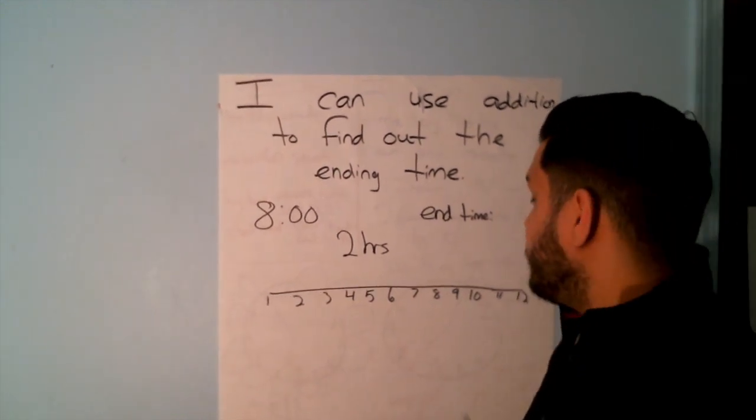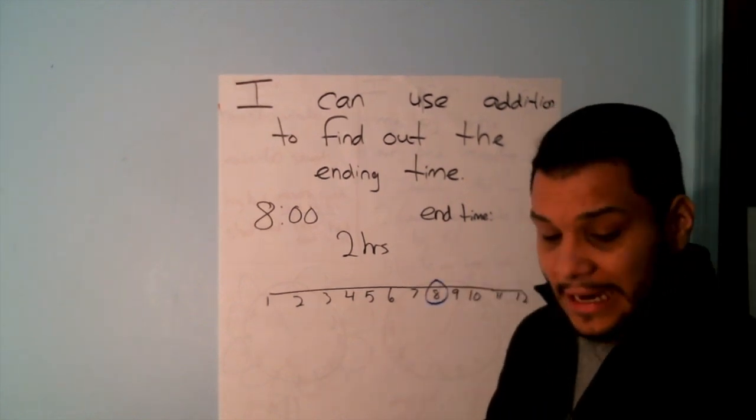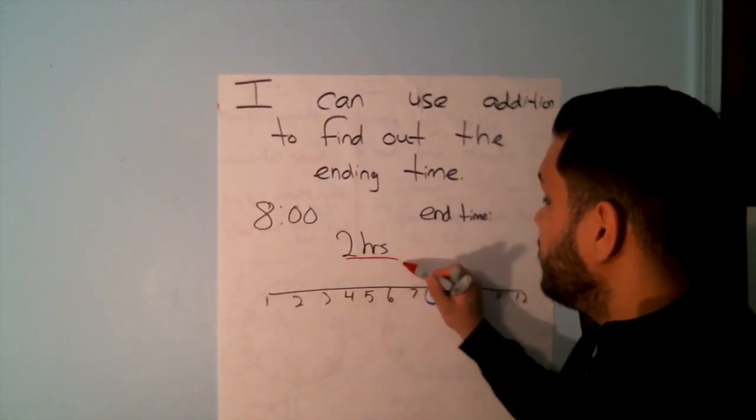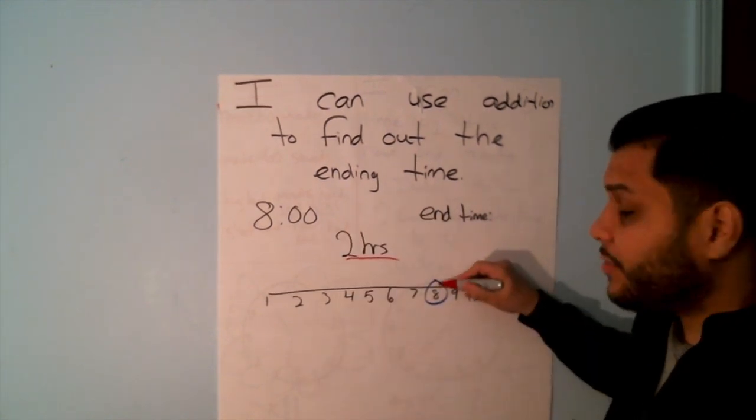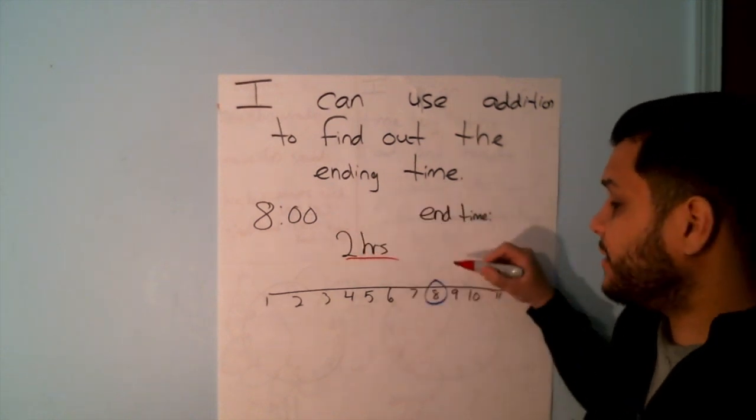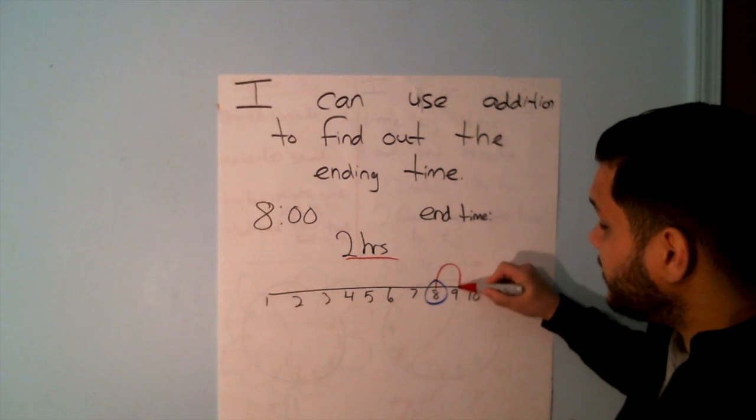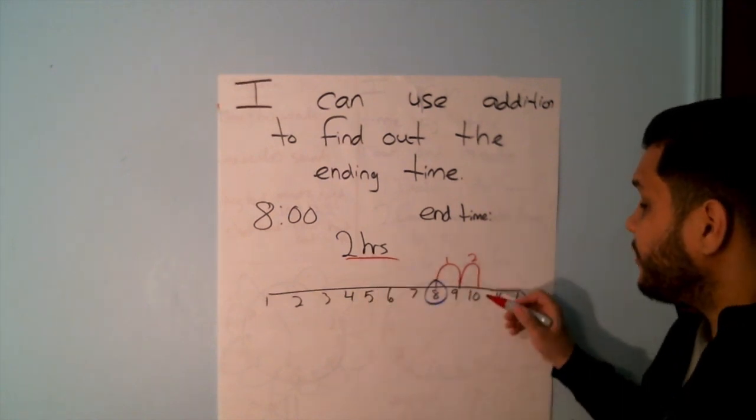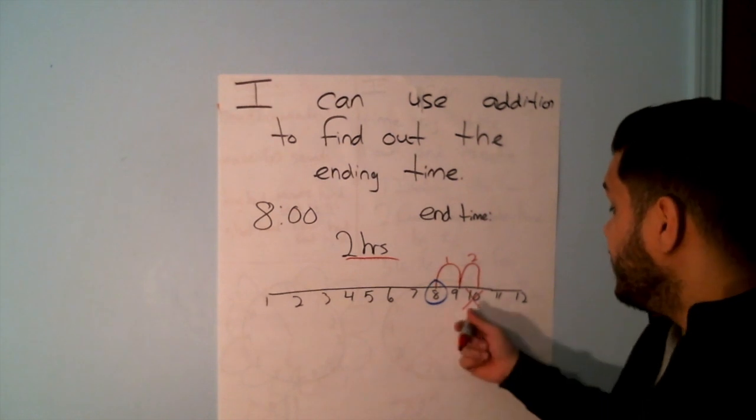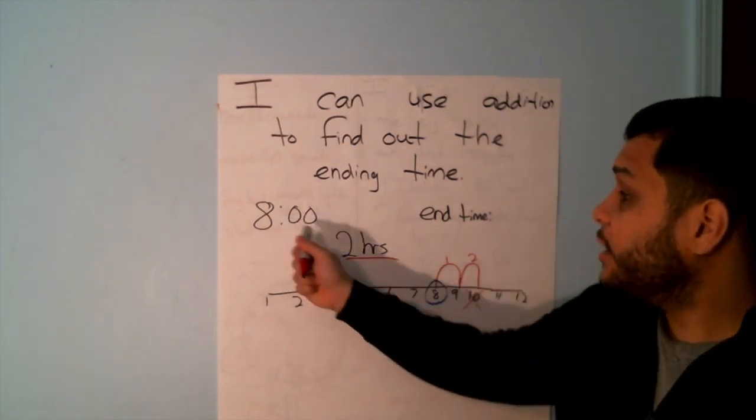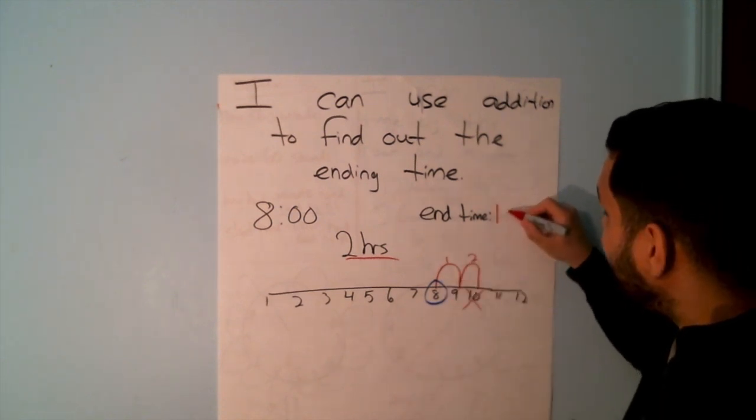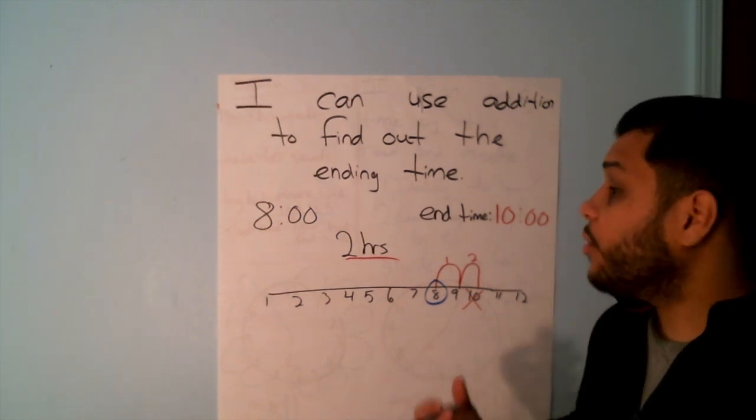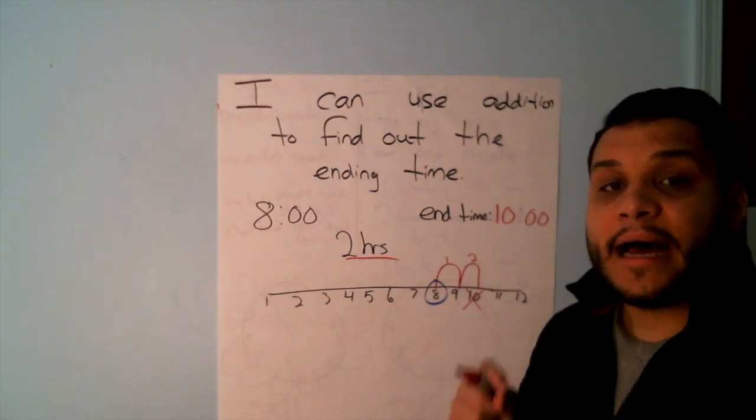So what I will do is circle my 8. Then it said that I moved how many hours? Yes, two more hours. So because I already have my 8 started, I'm not going to count this as 1 because I'm already at 8 o'clock. I will move on to the next one. So I will go 1, I moved 1, 2. How many mountains do I have? 2 mountains. I moved 2 hours. Then I will put an X on that number. So that tells me that 2 hours after 8 o'clock is an end time of 10 o'clock. I use my counting on strategy. Or what I also can do is add. But I'm going to show you that on our analog clock.